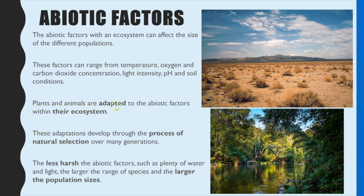Plants and animals are adapted to the abiotic factors within their ecosystem, so you could get some questions linked to adaptations. For different plant species, adaptations to very little water in the soil could be very extensive root networks, or plants growing very broad leaves to try to get a larger surface area to obtain light. These adaptations link to the topic of natural selection, because it would take many generations before the entire species possessed that particular adaptation.